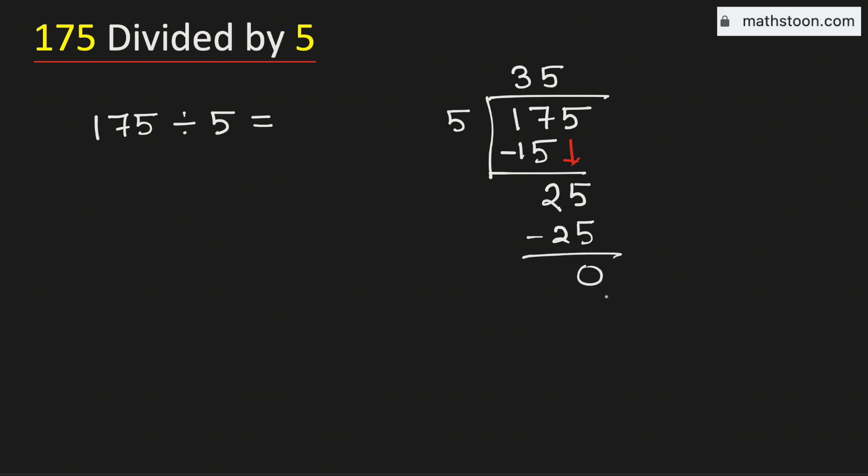As we have obtained the remainder 0, we will stop. Therefore, the value of 175 divided by 5 is equal to 35. And this is our final answer.